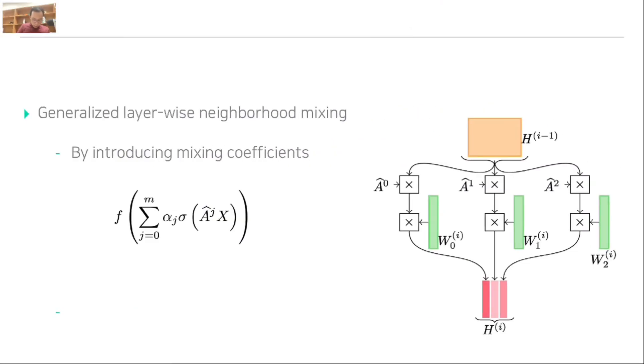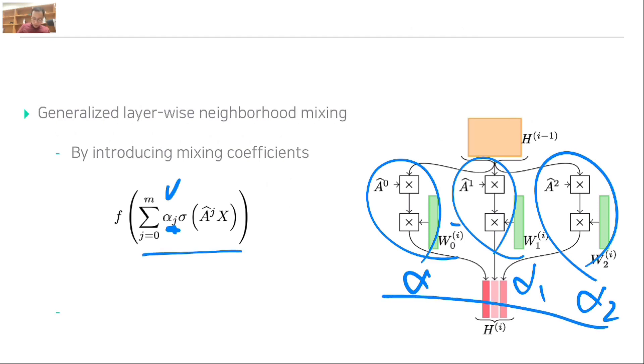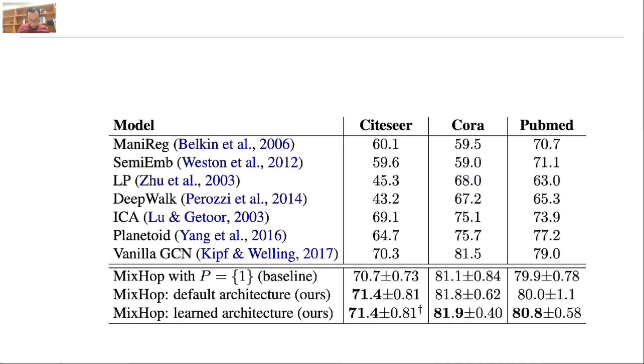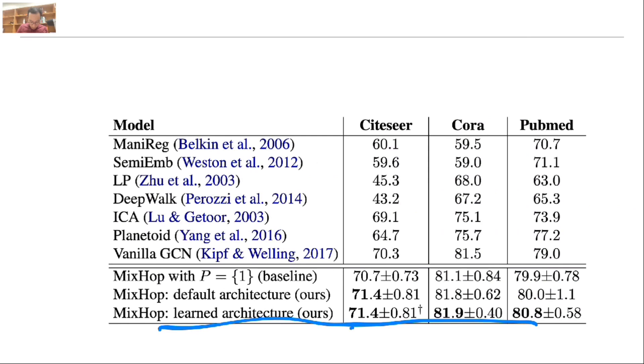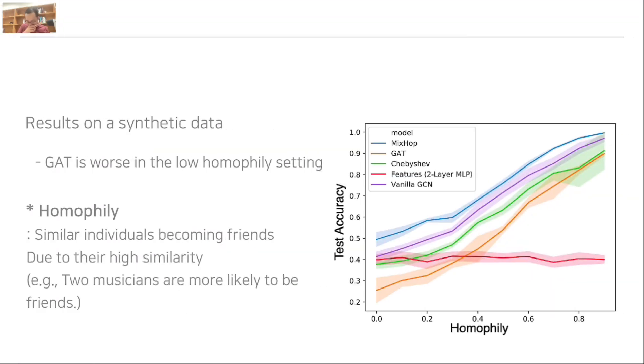They insist that this Mix-Hop layer is able to approximate that information. At the same time, they also introduce the mixing coefficient, so when we combine these we can assign mixing coefficients alpha 1, alpha 2. This is another trainable variable. They achieved the best performance compared to the others.